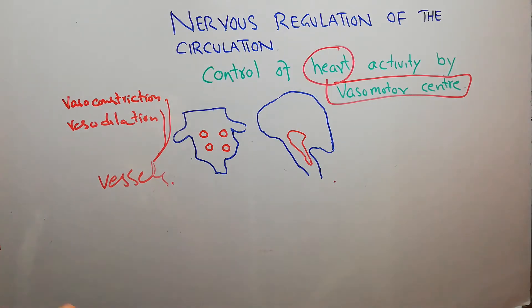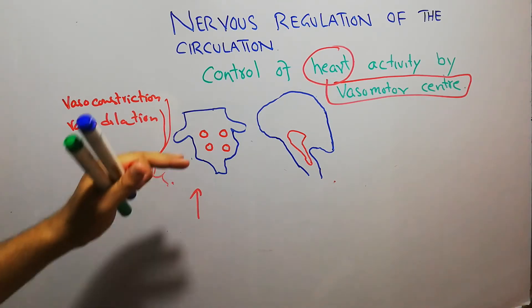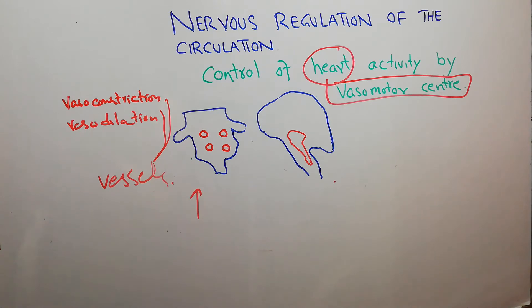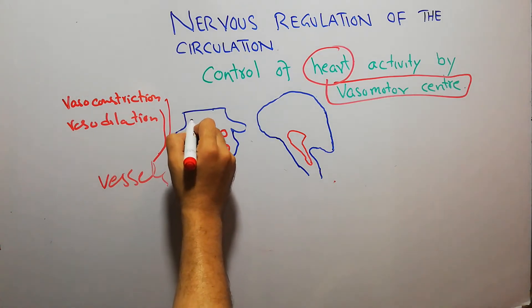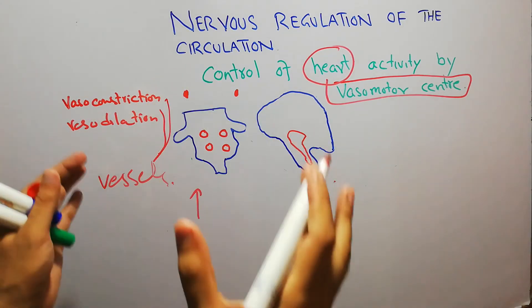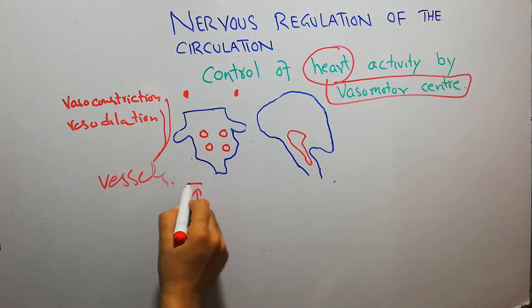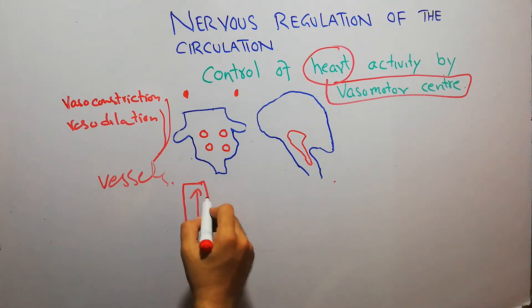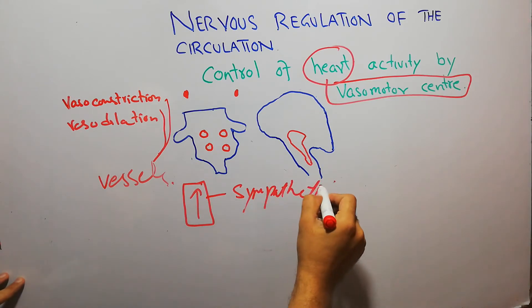Whenever there is a need to increase the heart rate — for example, when blood pressure is going down, or there is a sympathetic response like fear or fight-or-flight response — the lateral portions of the Vasomotor Center basically increase the heart rate with the help of sympathetic nerves.